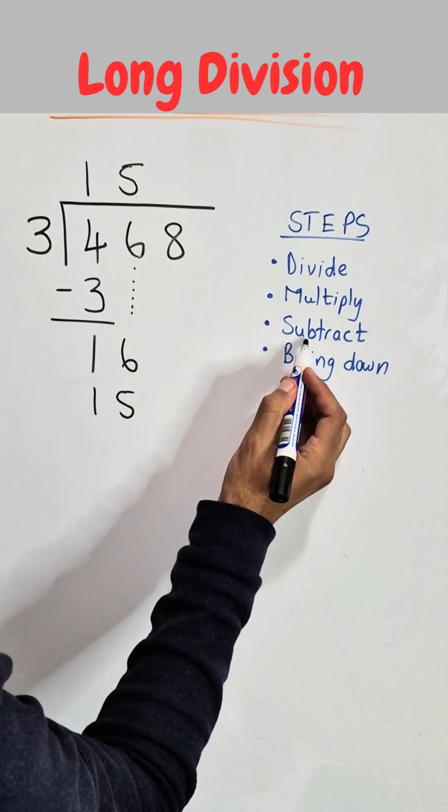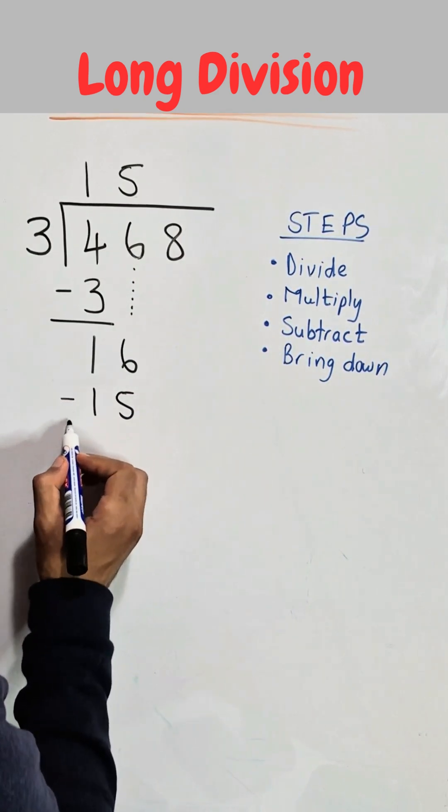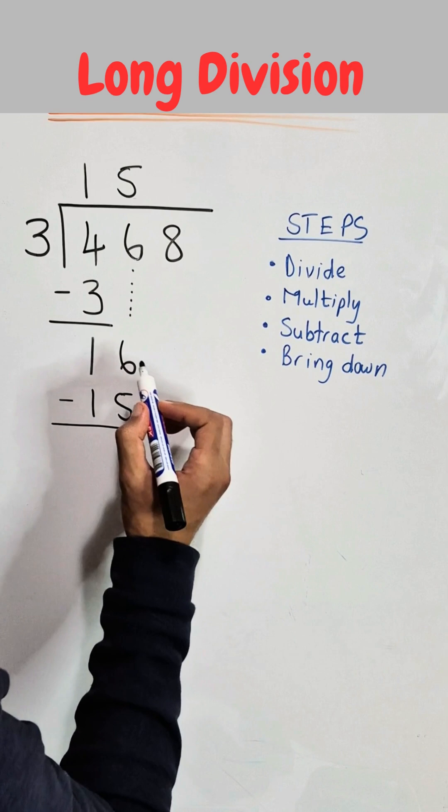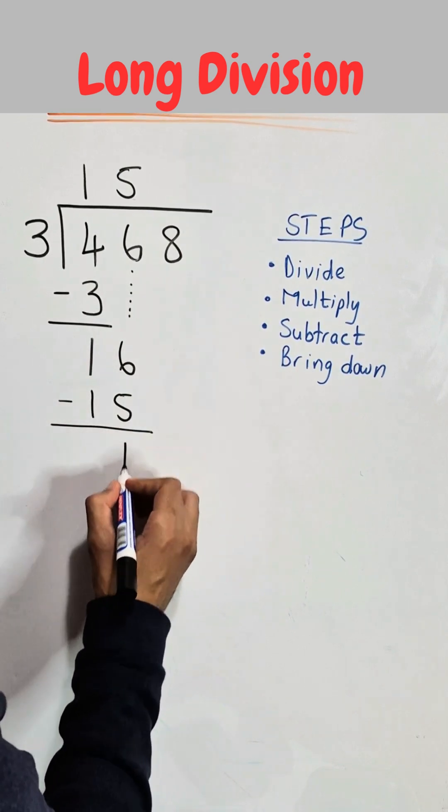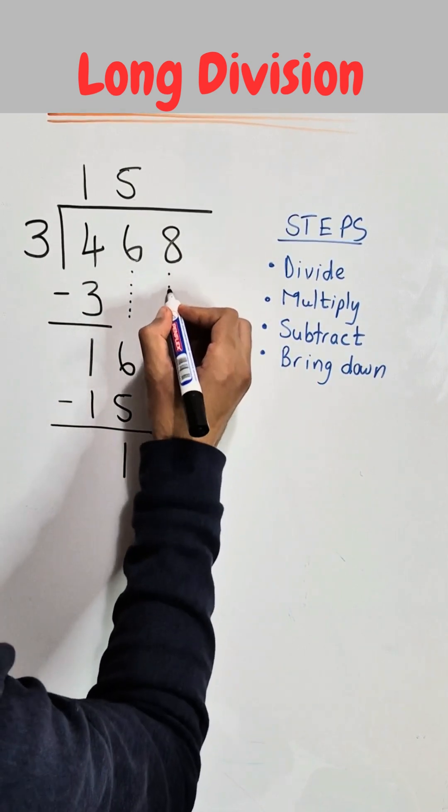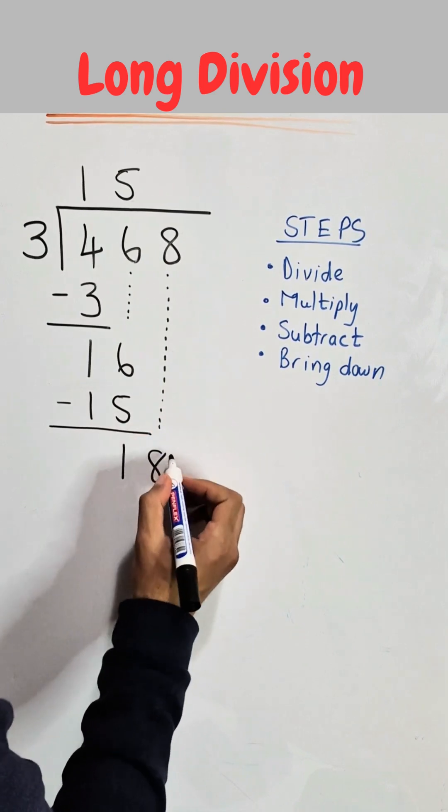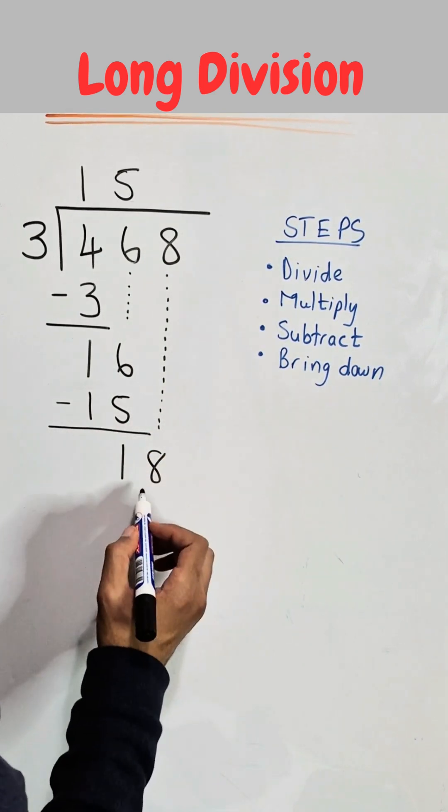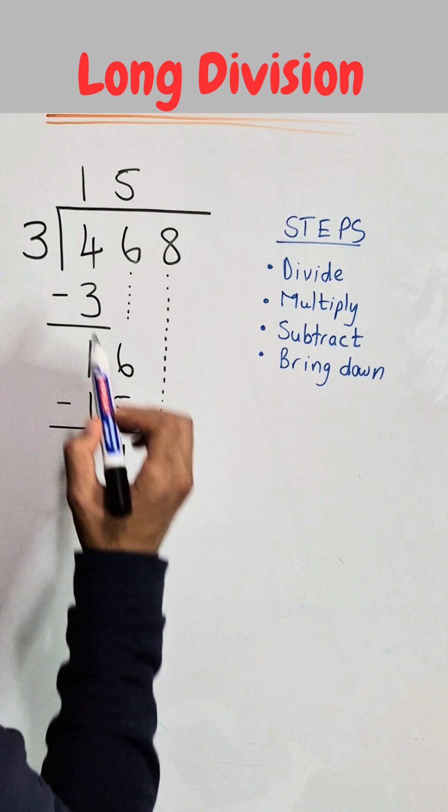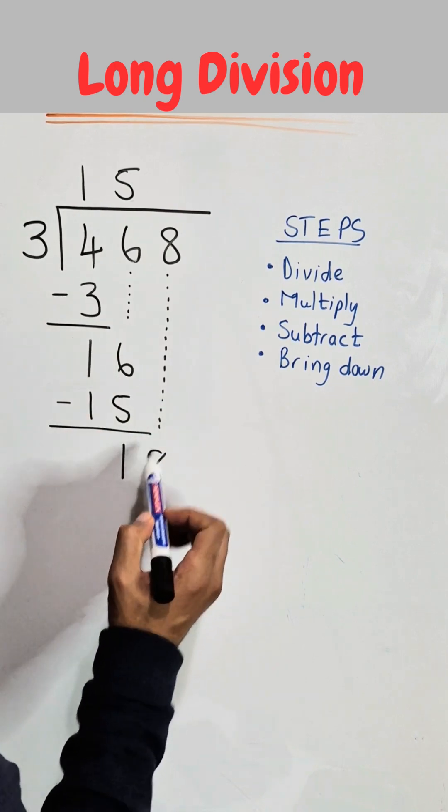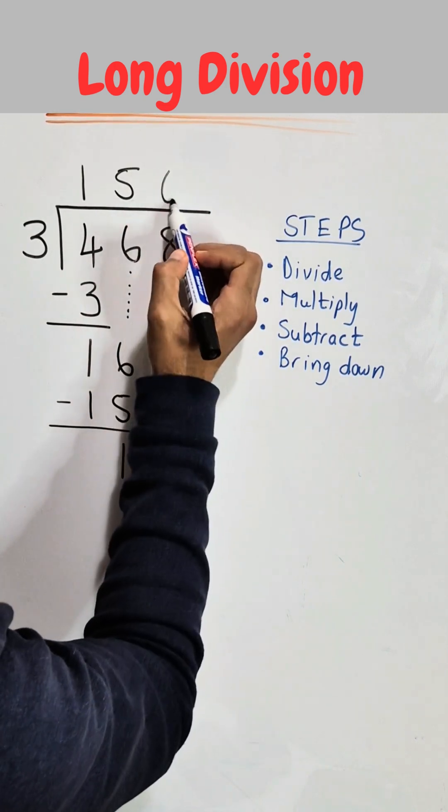And according to our steps the next step is to subtract that 15 from the 16. 16 minus 15 is equal to 1. Then our last step is we need to bring down the next number which is number 8 which makes this number here at the bottom 18. And 3 goes into 18 exactly 6 times and that 6 we'll place here on top.